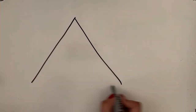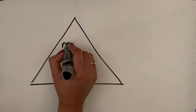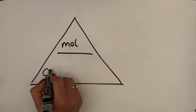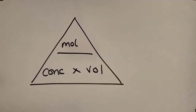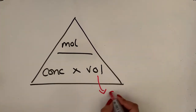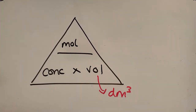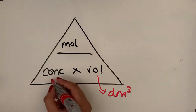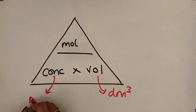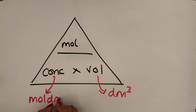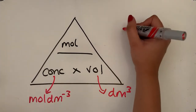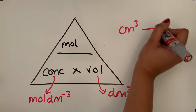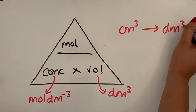When working with solutions and we need to convert quantities into moles or work out concentrations, the equation we use is: moles equals concentration times volume. The volume must be in decimetres cubed — if it's not, make sure you convert it. Concentration is in moles per decimetre cubed. If you have something in centimetres cubed and want to convert it to decimetres cubed, you just divide by a thousand.